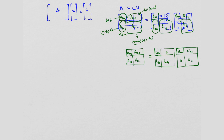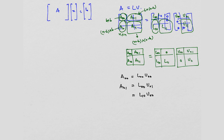Let me write out the equations we get. What is A00? Multiply the first row of L with the first column of U: L00 multiplied by U00 gives me A00. If I multiply the top part of L with the right part of U, I get L00 times U01 equal to A01. Now multiply the lower part of L with the left part of U: L10 times U00 gives me A10. And finally, L10·U01 plus L11·U11 gives me A11.